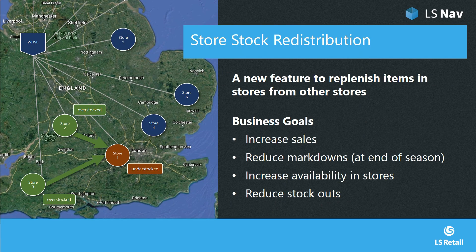What is store stock redistribution? Store stock redistribution is a new feature in LS Nav to replenish items in stores from other stores. This is needed when all our items are distributed across our store network and only few or no more items are left in the warehouse. Then we want to redistribute items from stores with existing stock to stores with high demand.